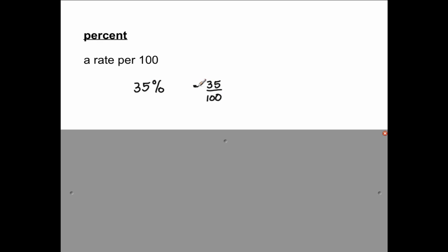35 for every hundred. And of course fractions can be simplified. So you pull out a common factor in both of these numbers. The common factor in both 35 and 100 is 5. And so 35 divided by 5 is 7. And 100 divided by 5 is 20.